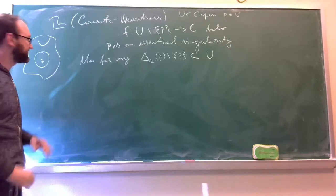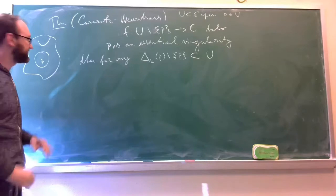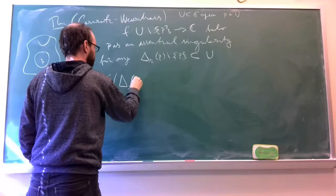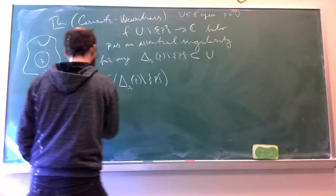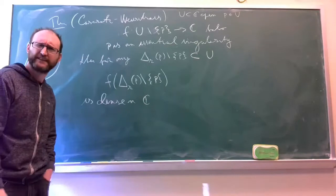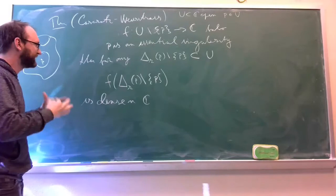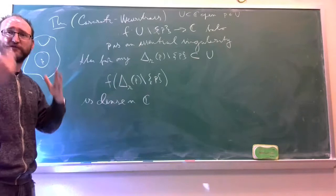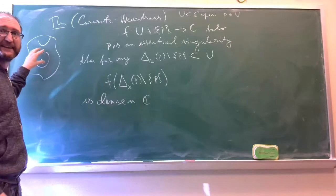I can take any punctured disk around P. Then the image of this guy is dense in C. I get a dense set. I get close to every possible value in the complex plane just by looking at the image of this.